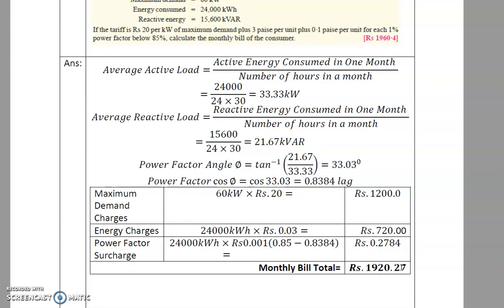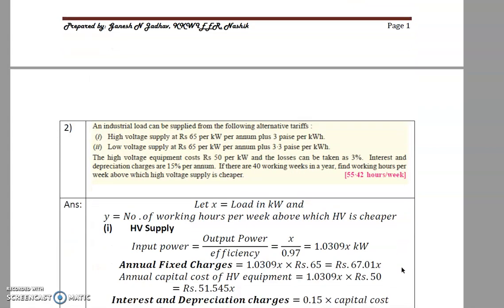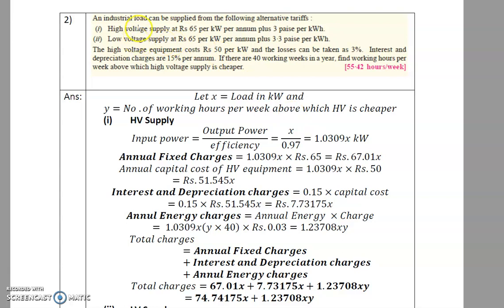Now the second problem: an industrial load can be supplied from two alternatives — HV supply and LV supply. For HV supply, the rate is rupees 65 per kW per annum plus 3 paise per kWh. For LV supply, it is rupees 65 per kW and energy rate is 3.3 paise per kWh. High voltage equipment cost is rupees 50 per kW, and losses are 3%.